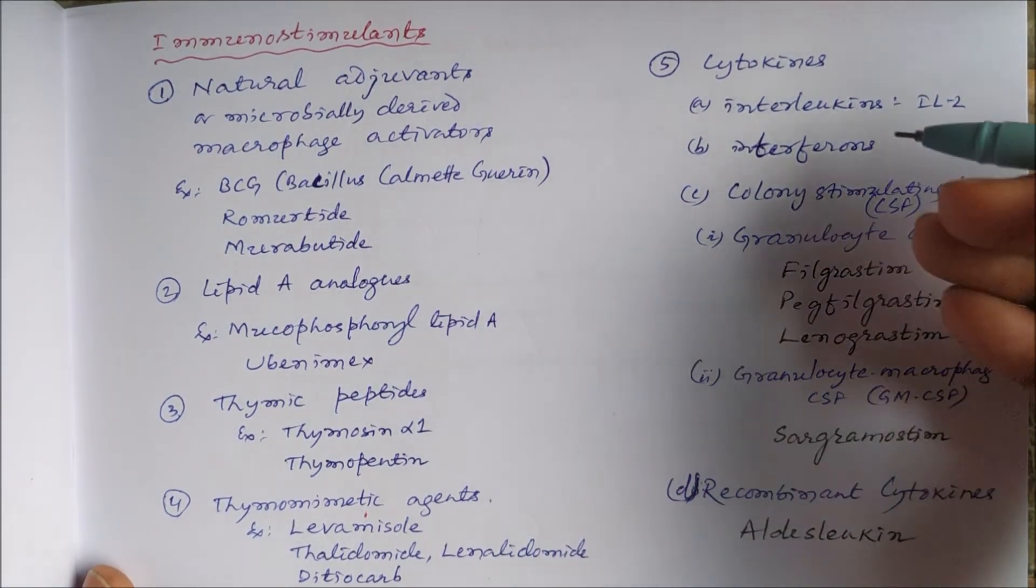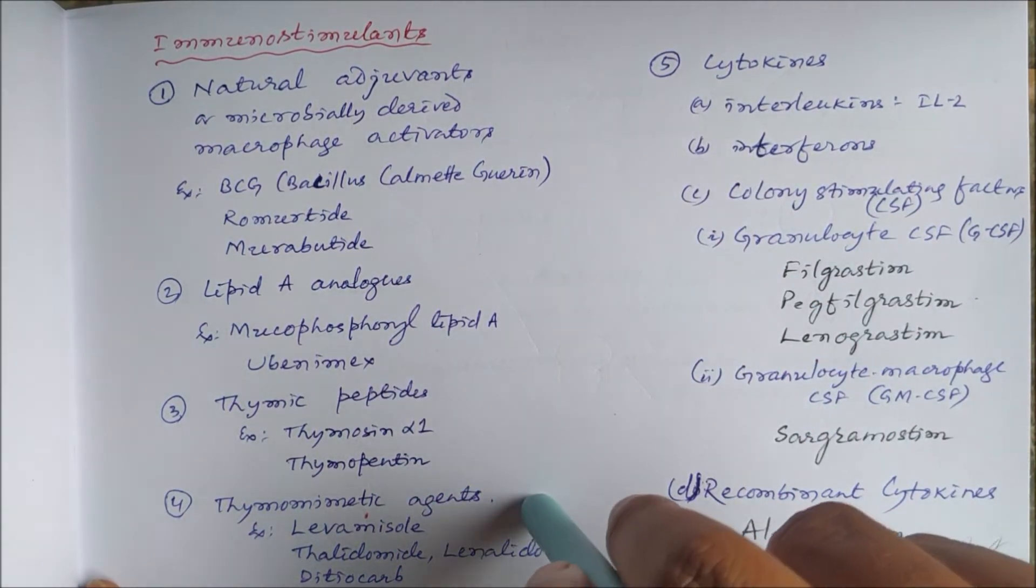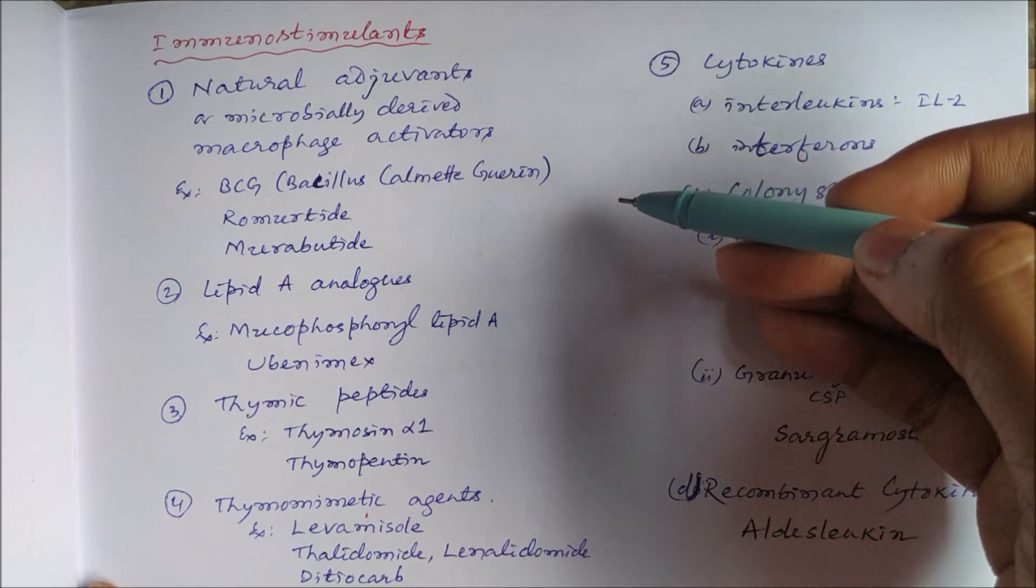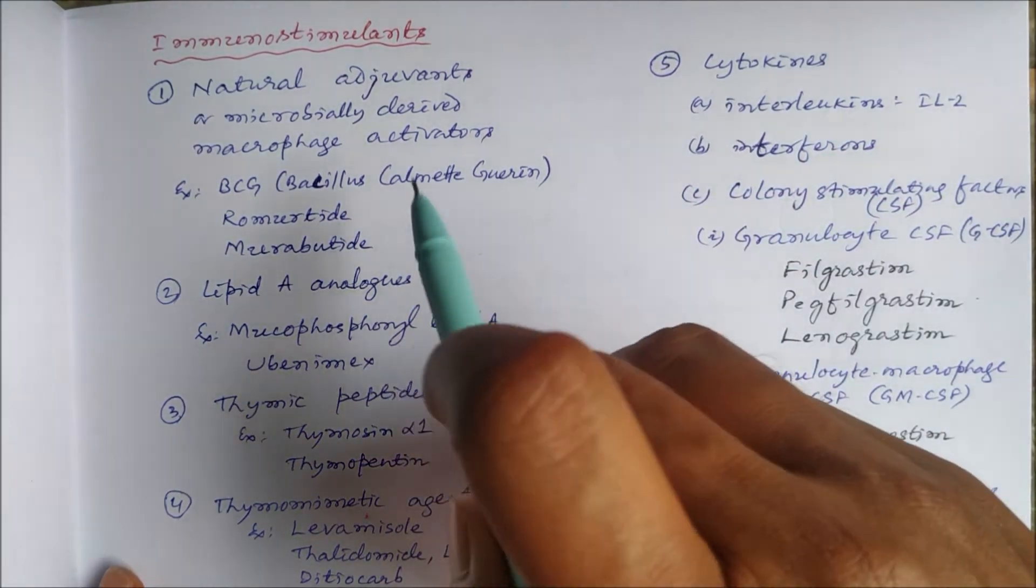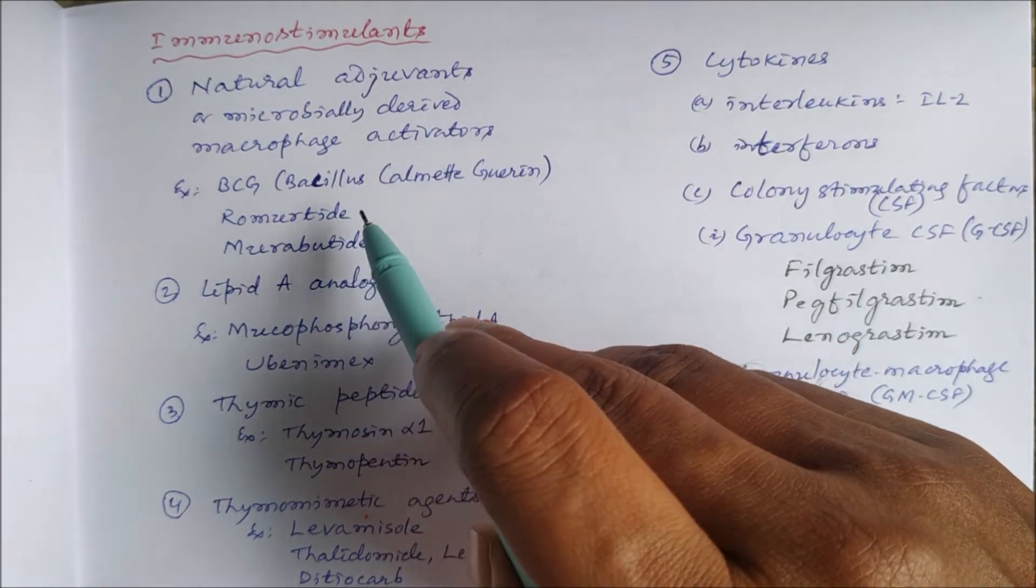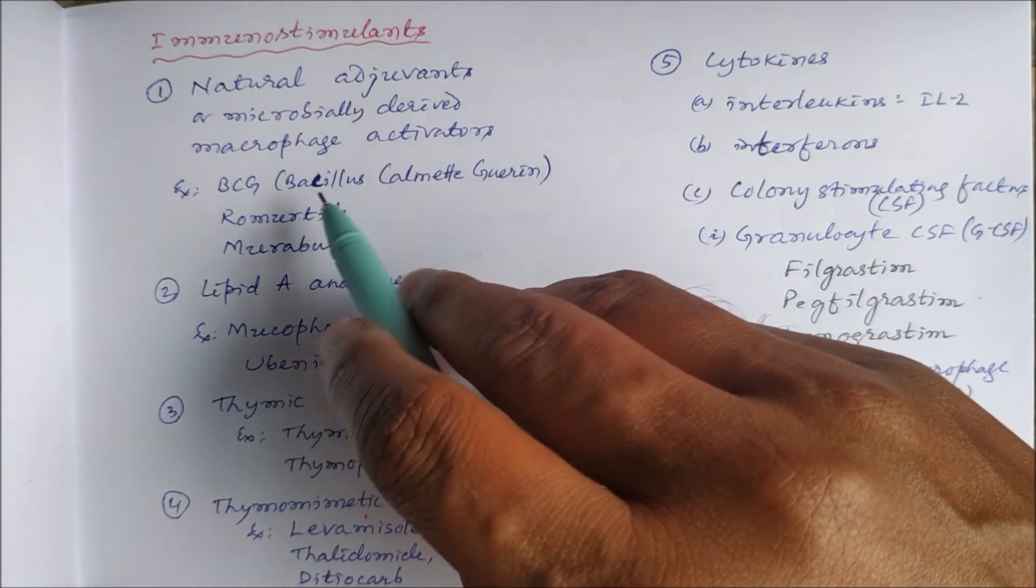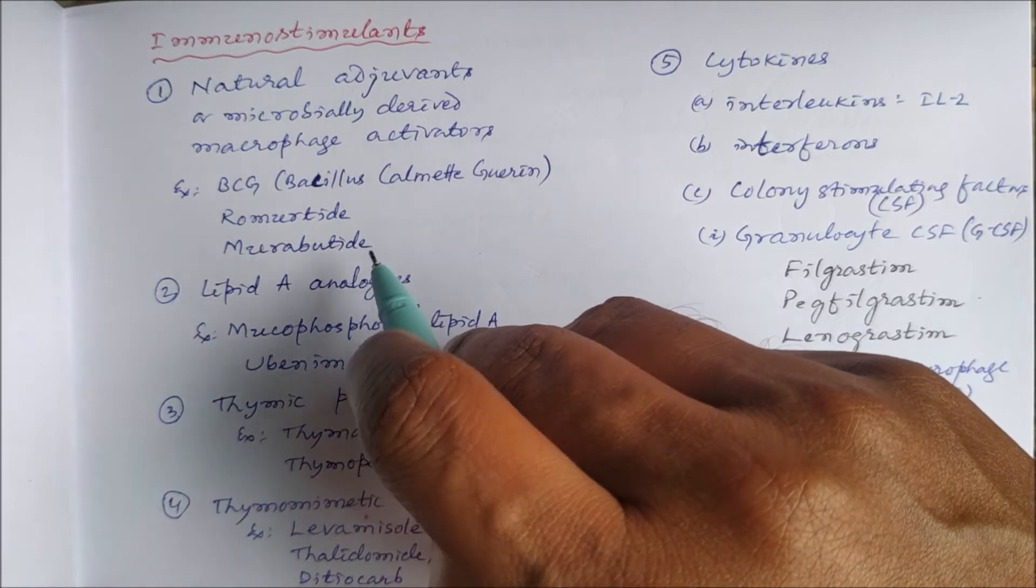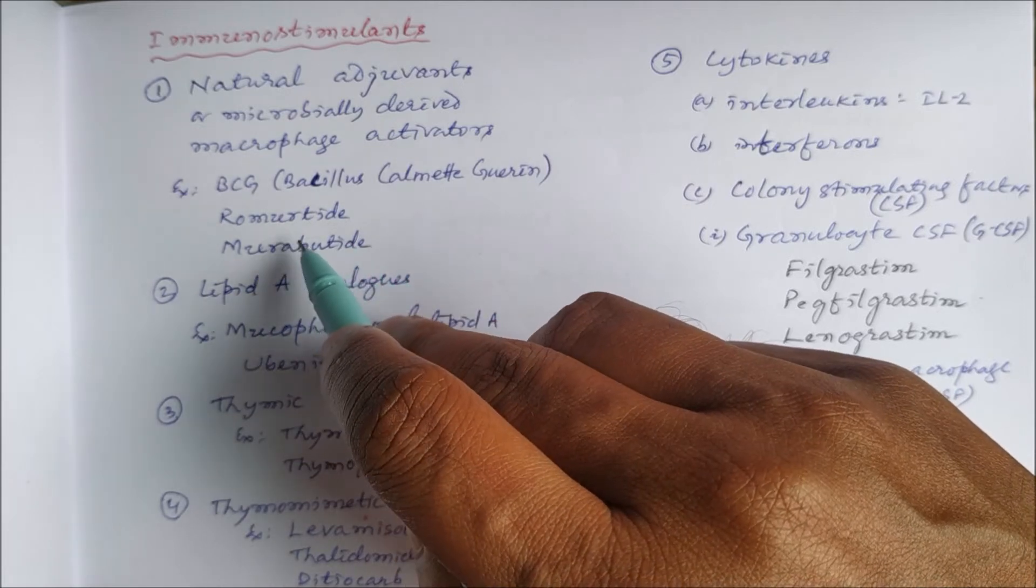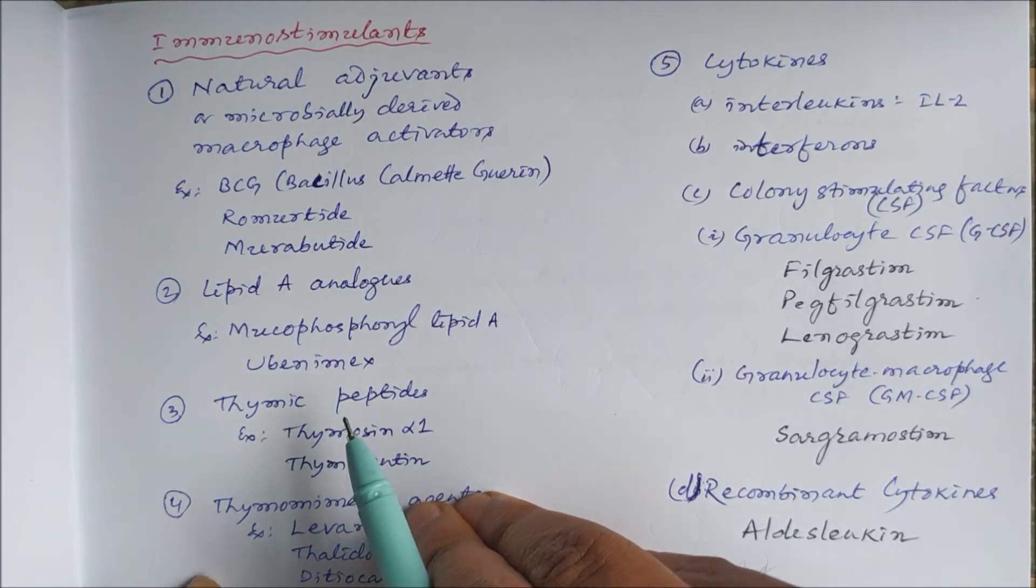Immunostimulants also include thymomimetic agents which stimulate the thymus gland or some other drugs. We can classify them: first as natural adjuvants or microbial derived macrophage activators. The first vaccine which a newborn baby takes is the BCG vaccine, so that is an immunostimulant. Then other drugs like romurtide and muramitide, these are microbial derived macrophage activators.